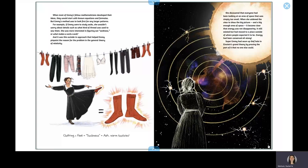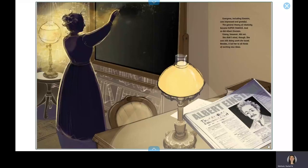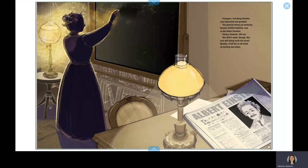Super Emmy had sewn up the hole in Einstein's grand theory by proving the part of it that no one else could. Everyone, including Einstein, was impressed and grateful. The general theory of relativity became super famous, and so did Albert Einstein. Emmy, however, did not.